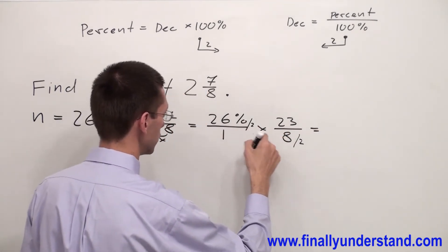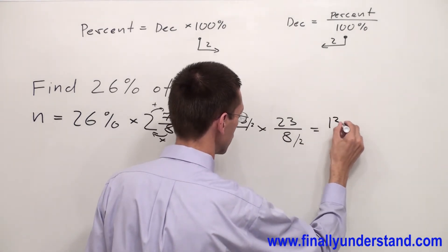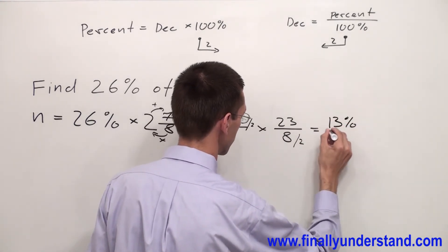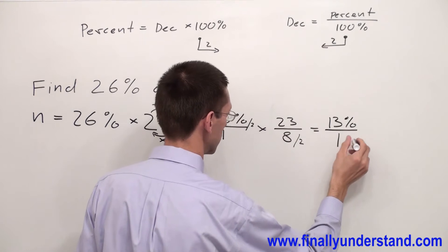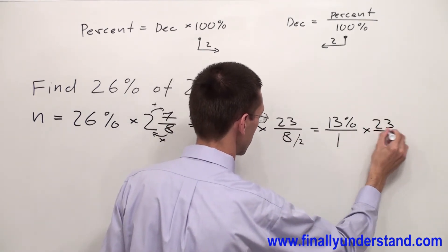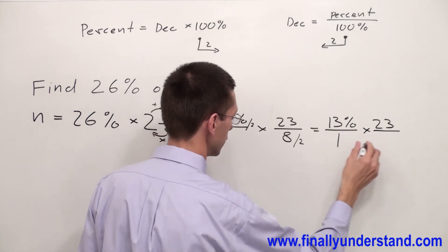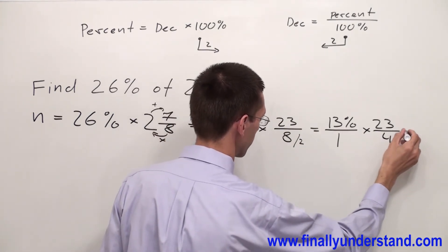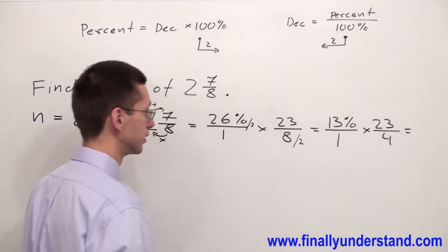26 divided by 2 is 13% over 1 times 23 over 8 divided by 2 is 4. Now I cannot reduce anything else.